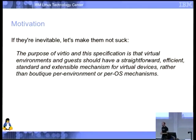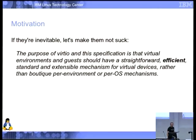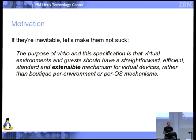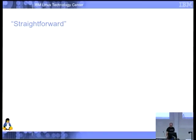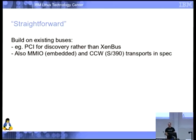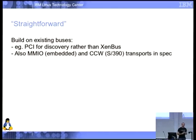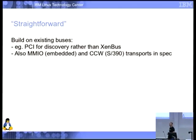So let's make them not suck. Anything in italics in this talk is a direct quote from the standard document itself. What we want is something that is straightforward, obviously efficient, standard, and extensible. Straightforward means, for example, that a device should build on existing buses — generally PCI. Everyone expects PCI devices in their machine, and it already solves problems like device discovery. There's a very thick standard on that stuff — let's use it, not create some boutique hypervisor bus.